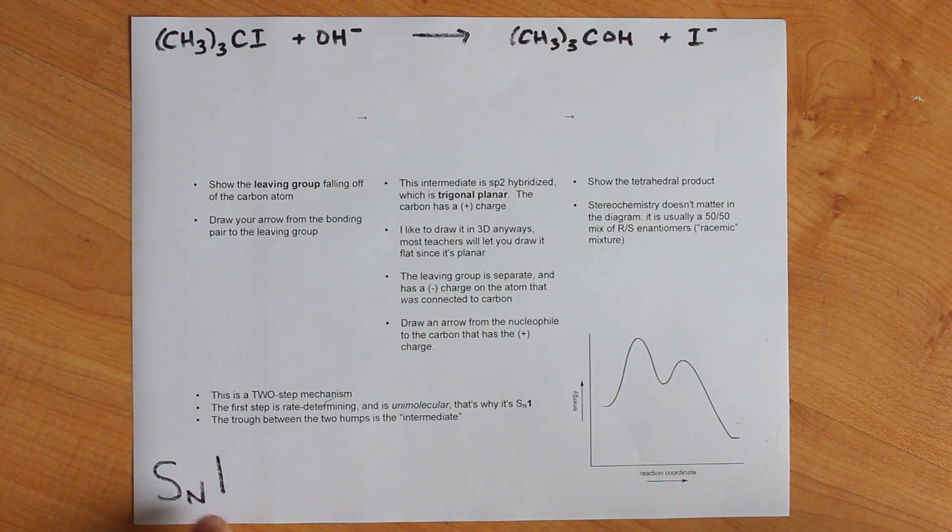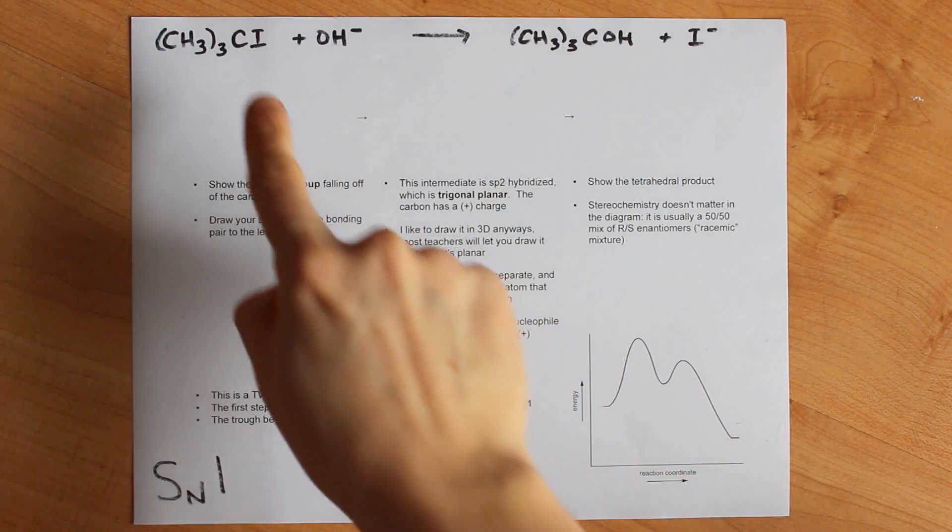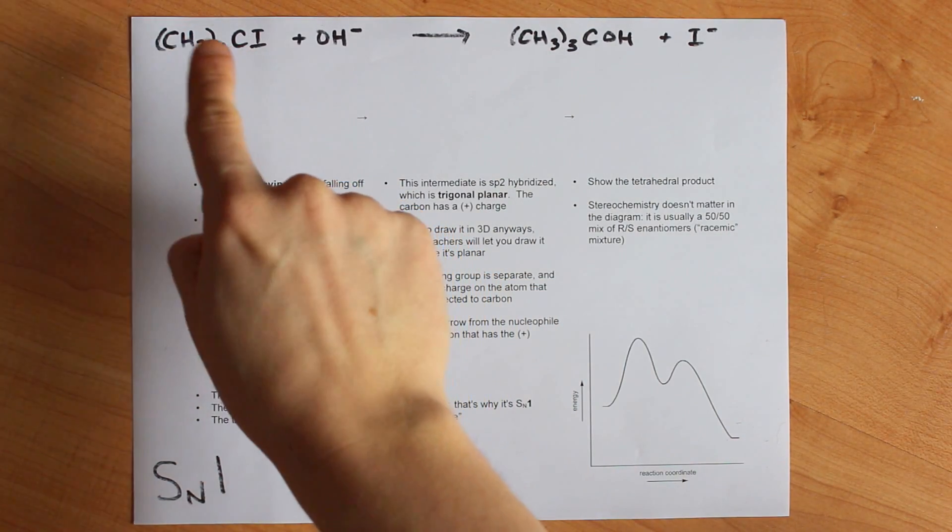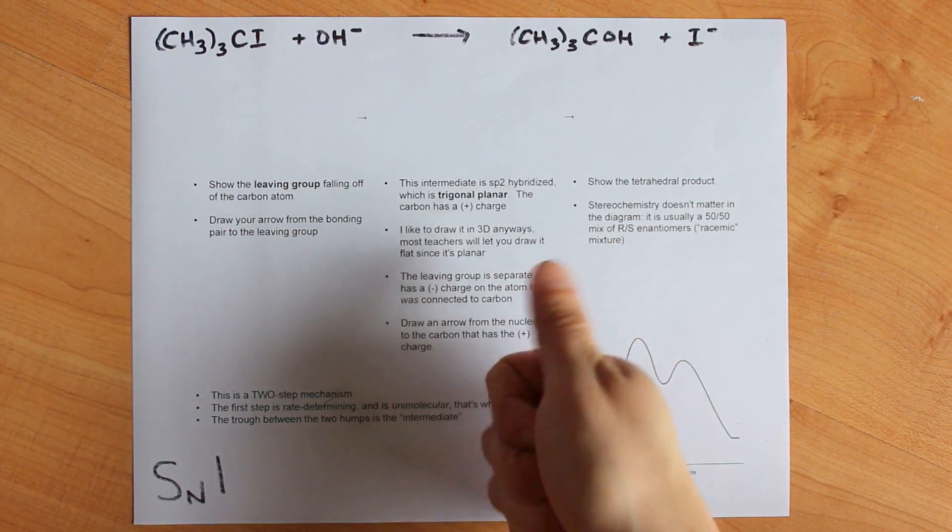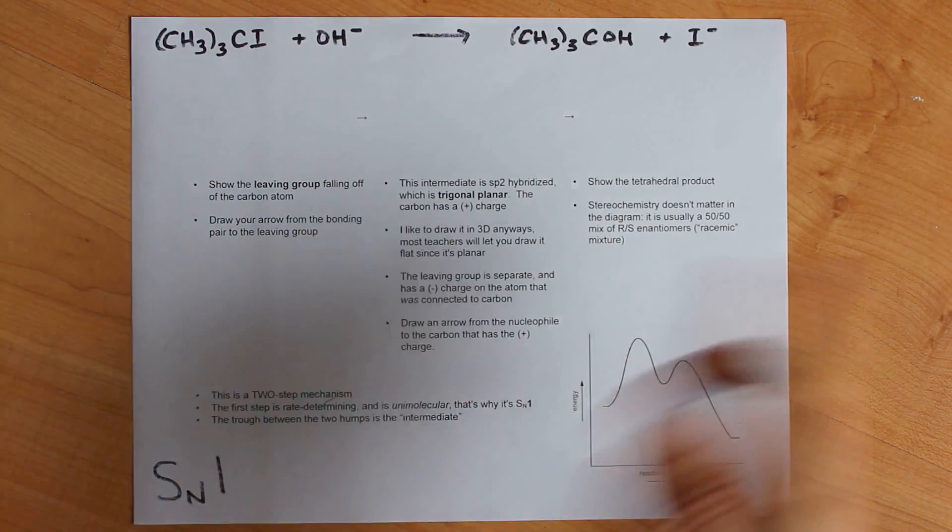Welcome to my video about SN1 reactions, that's substitution nucleophilic unimolecular. An example reaction of this is when a leaving group falls off of a carbon that is not primary. It needs to be either secondary or tertiary for SN1 to play any role.